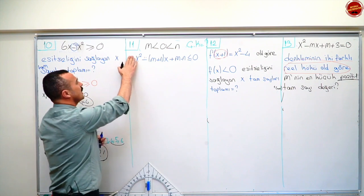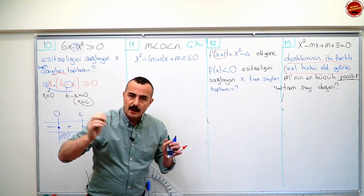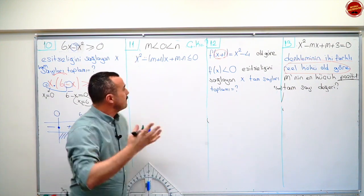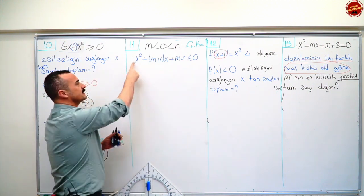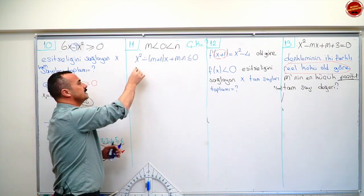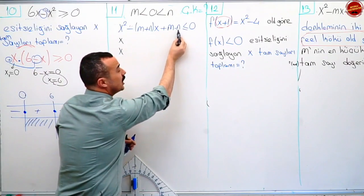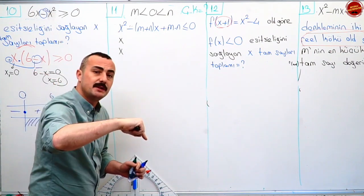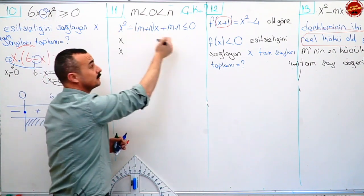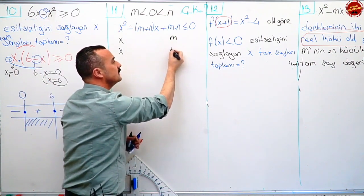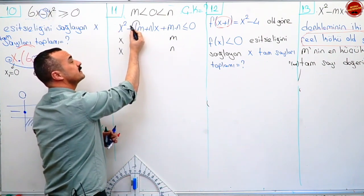Şimdi geldik on birinci sorumuza. Bu şekildeki ifadeleri de çarpanlarına ayırmayı biliyoruz. Küçük eşit sıfır olduğu yerleri istiyor. Şimdi x kare, x ile x'in çarpımı. M çarpı ne olabilir? İçeriye bak, m ile n parçalanmış. O zaman bunu m ile n'nin çarpımı gibi düşünüyorum. Şimdi işaret belirlemem lazım: m'nin işareti eksi, n'nin işareti eksi.